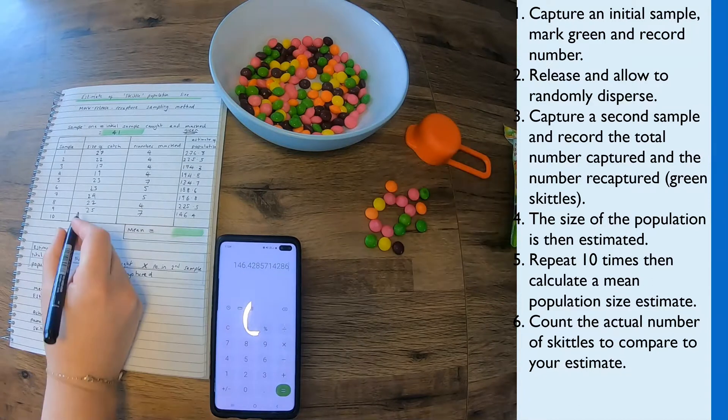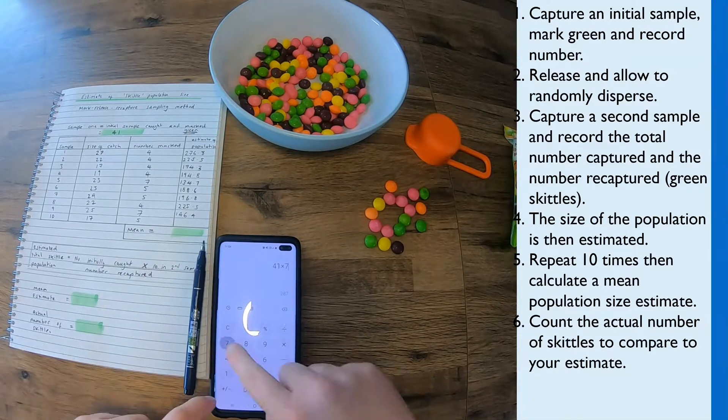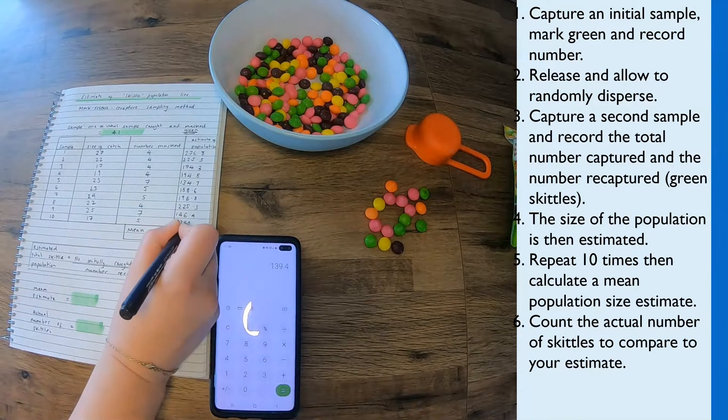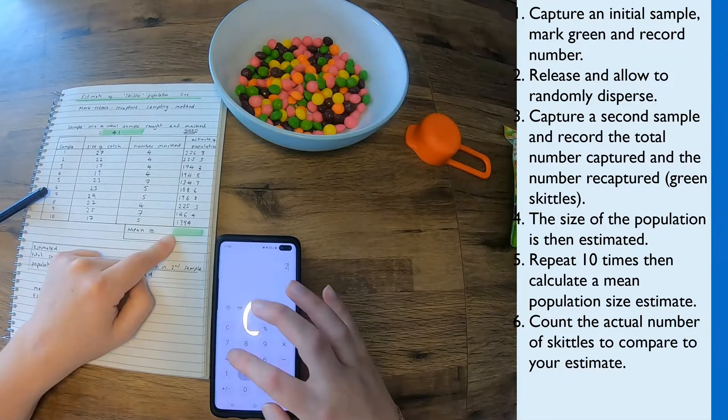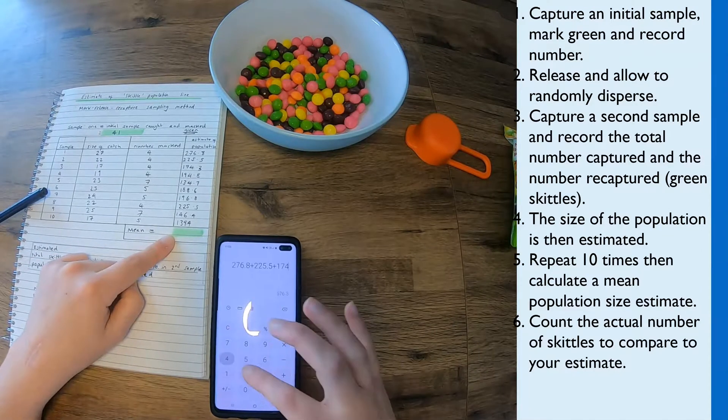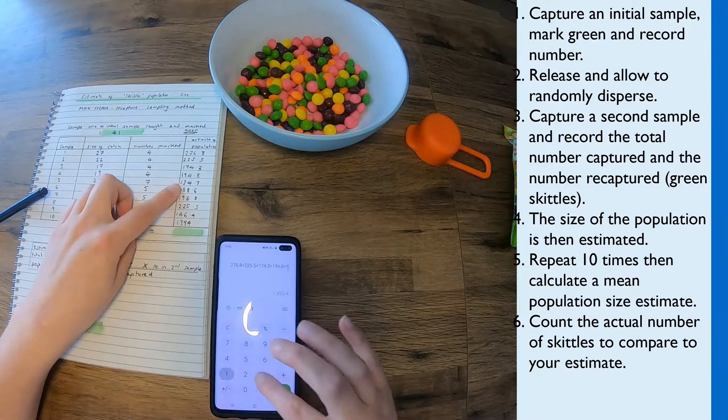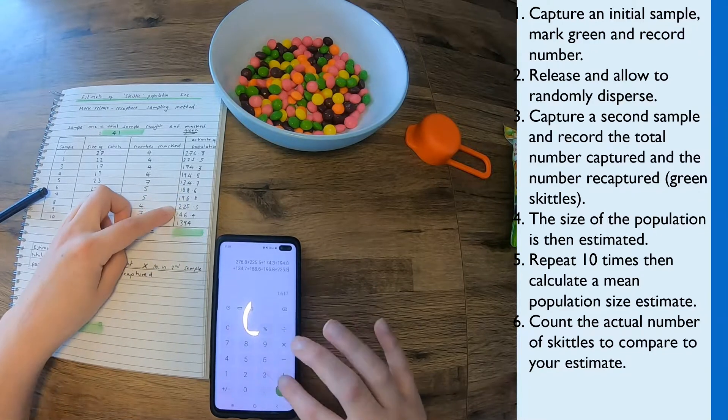So here's my last sample that I'm taking, and I now have the 10 repeats. So the next step is I'm going to add all of those estimates together to see what my mean estimate of the Skittle population is.